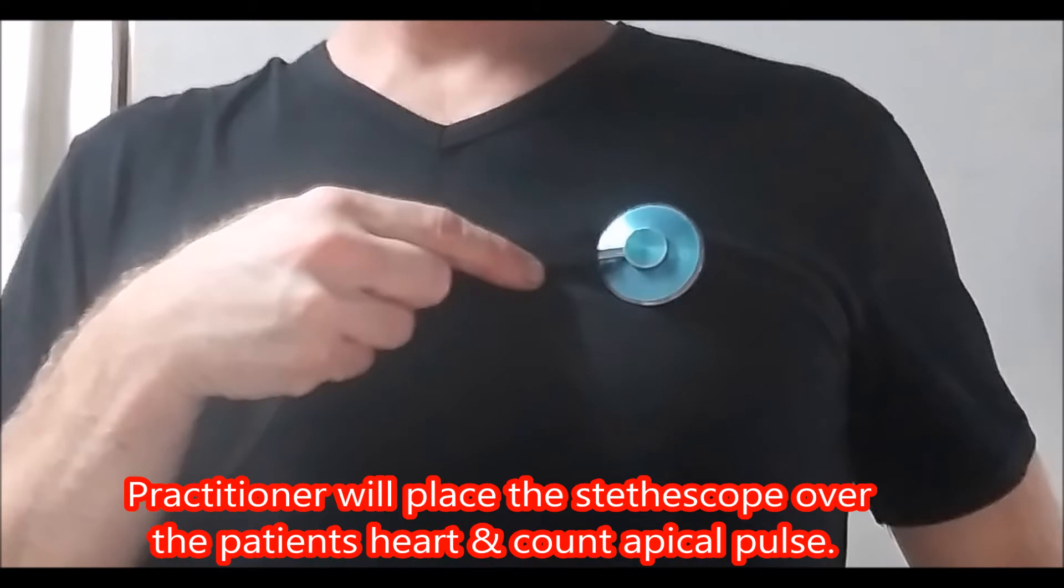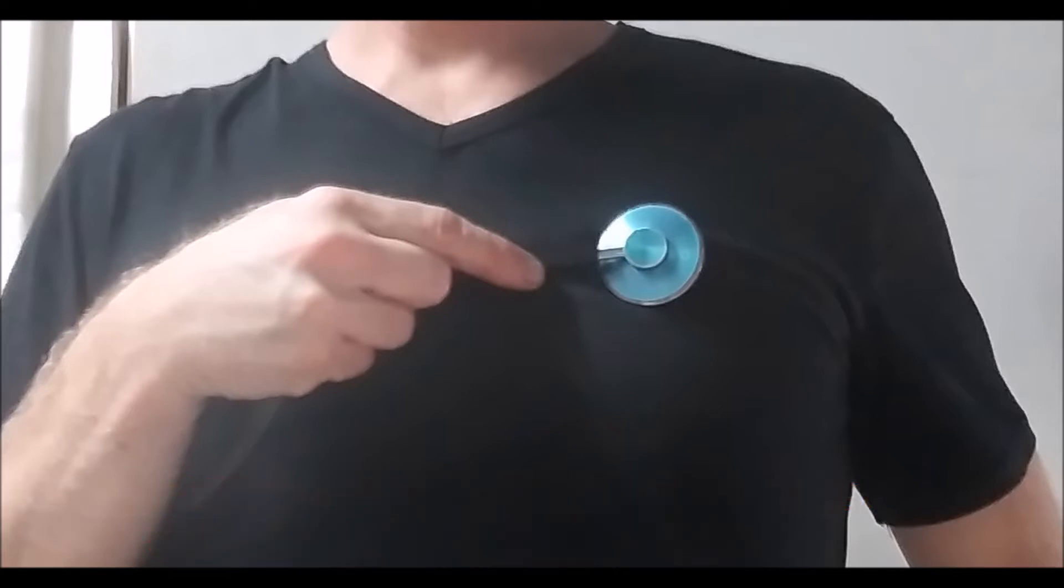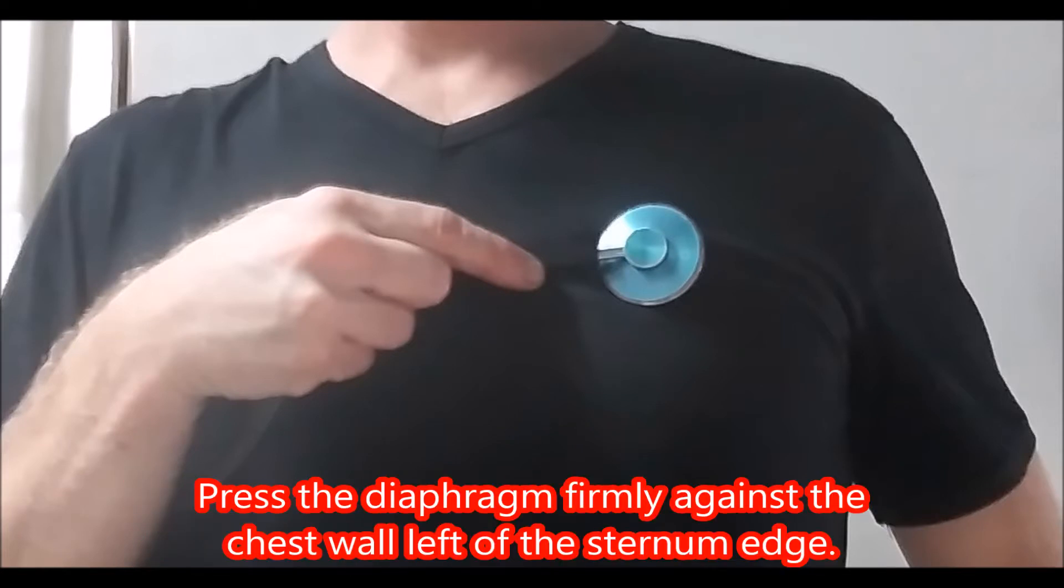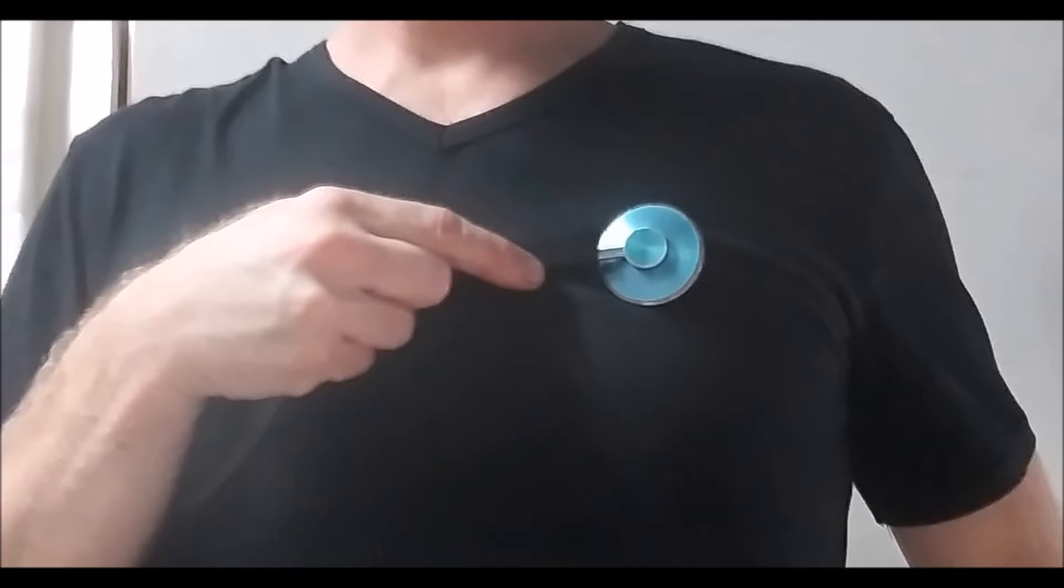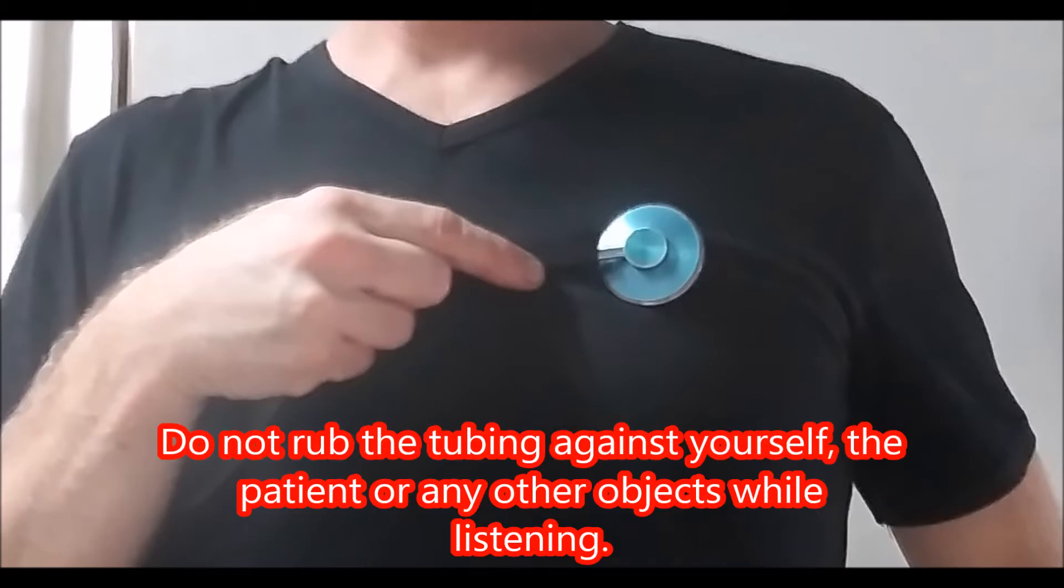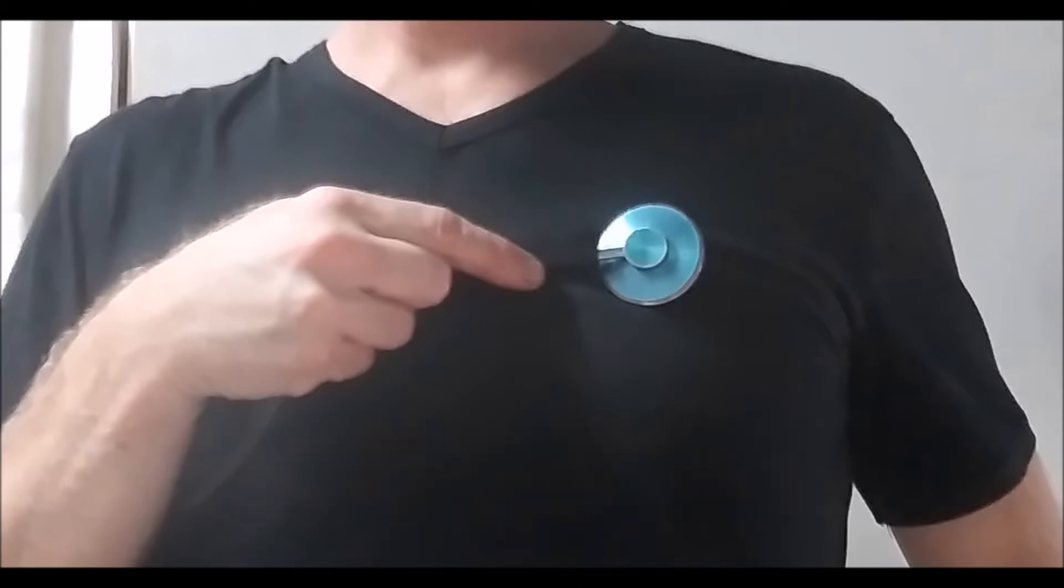The practitioner will place the stethoscope over the patient's heart and count the apical pulse. Press the diaphragm firmly against the chest wall of the left sternum edge. Do not rub the tubing against yourself, the patient, or any other objects while listening.